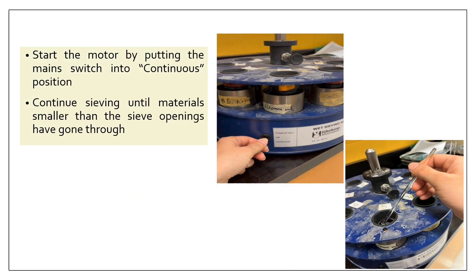After placing the cans, start the motor by putting the main switch into the continuous position as shown in the picture and let the motor keep running until only sand particles are left on the sieve. But if some aggregates remain stable after 5-8 minutes of sieving, turn off the motor and drop them with the rubber-tipped rod until they are disintegrated as shown in this figure. Continue sieving until all the materials smaller than the screen opening have gone through.